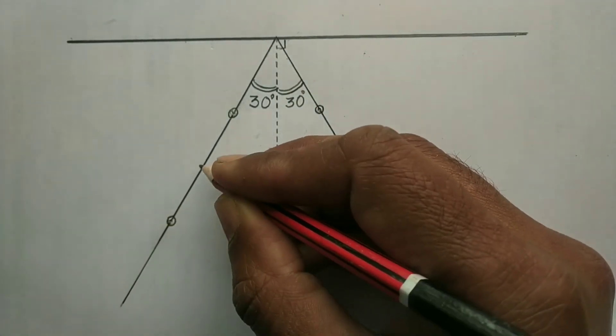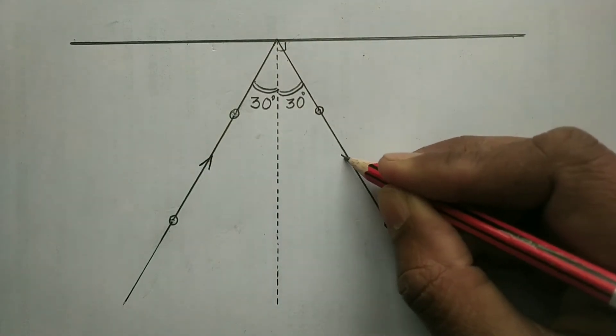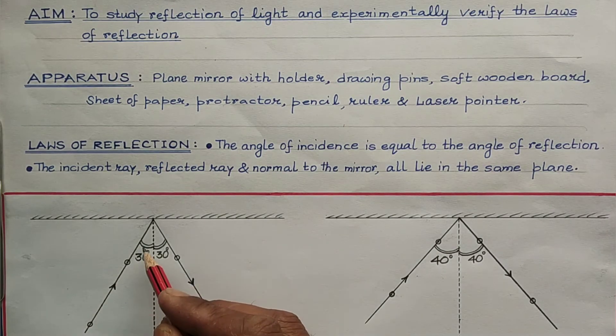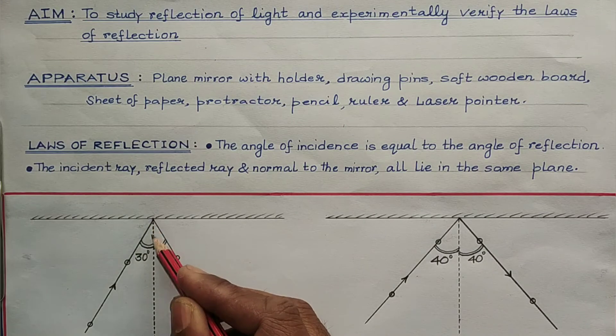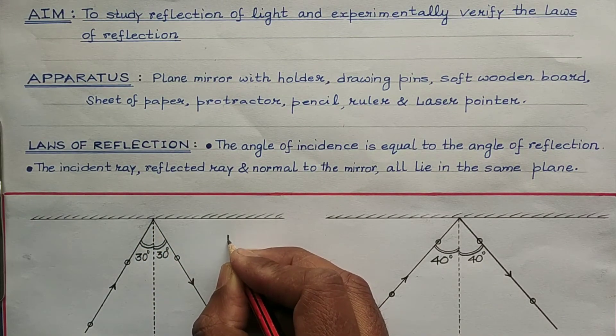Now students, don't forget to indicate the direction of the incident ray as well as the reflected ray. Now, here students, I have verified the laws of reflection corresponding to the angle of incidence of 30 degrees and angle of incidence of 40 degrees.